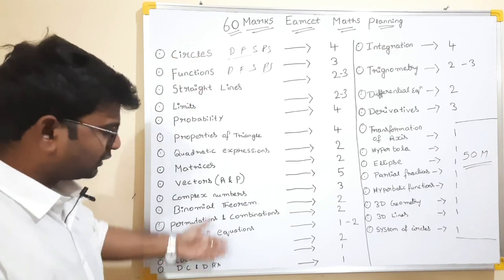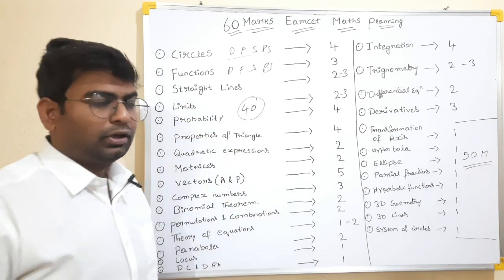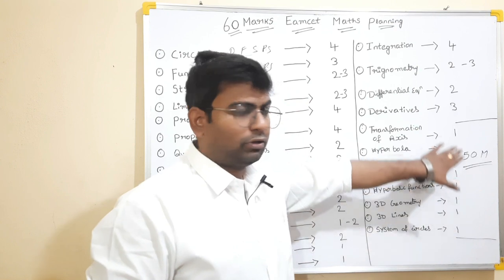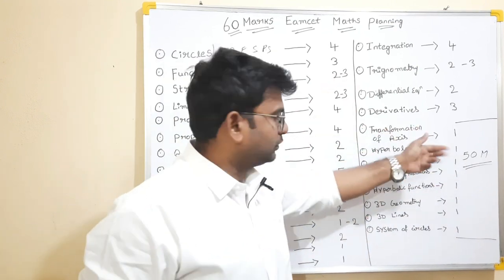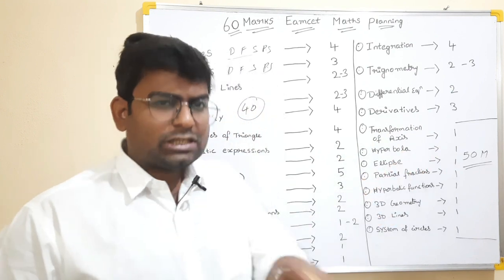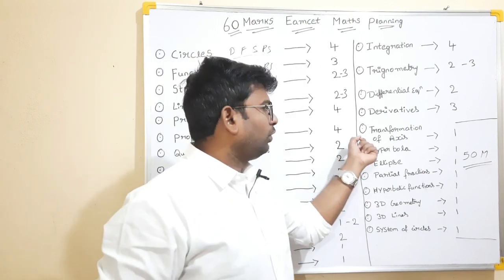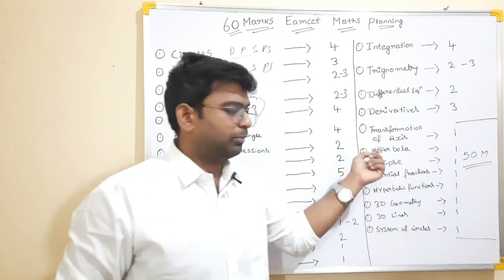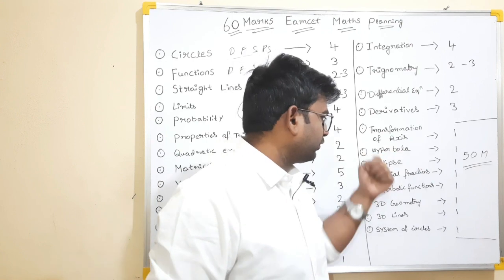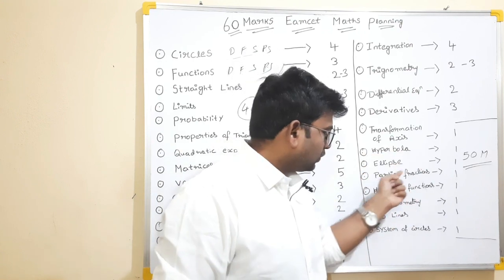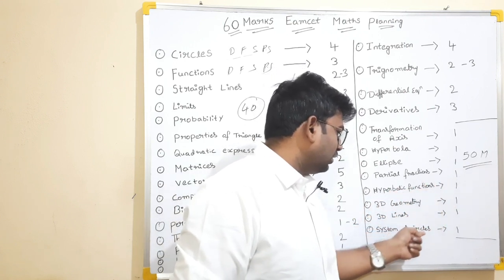So straight line — first of all, use the first one. 40 marks — when you've got the grip, you will do this chapter to make 50 marks. This chapter is called Transformation of Axis. It is easy to do.